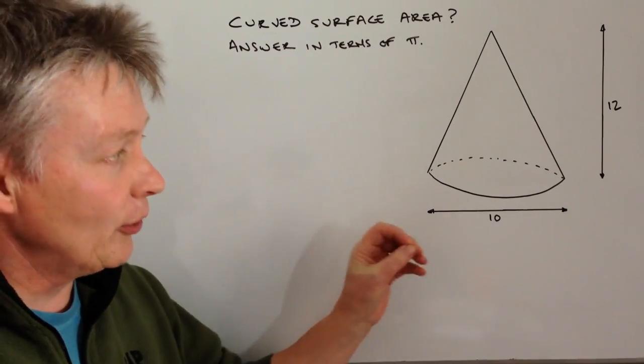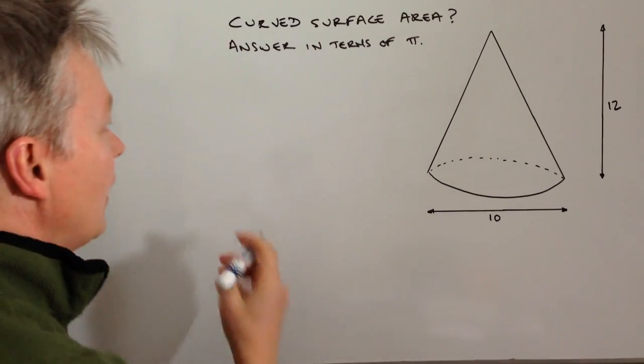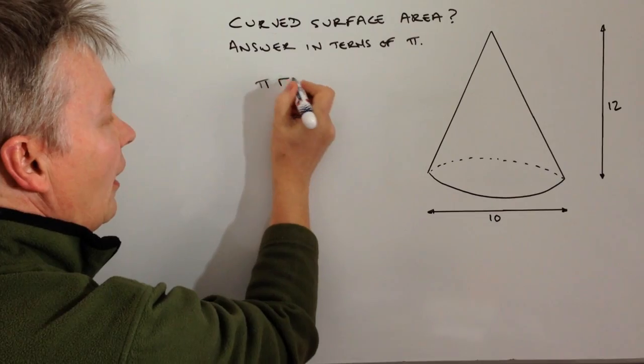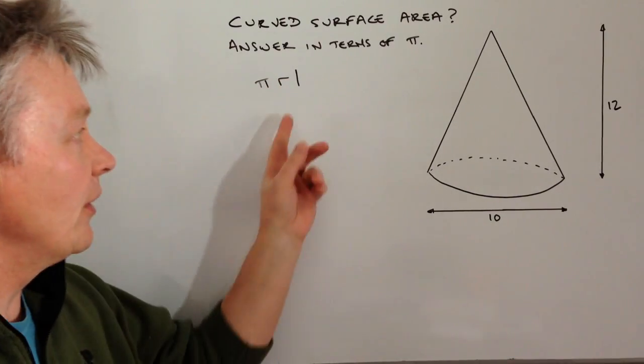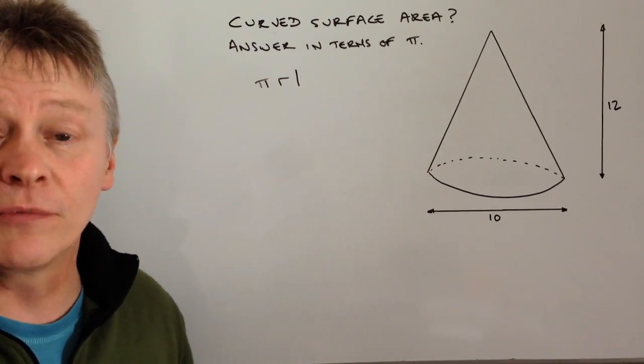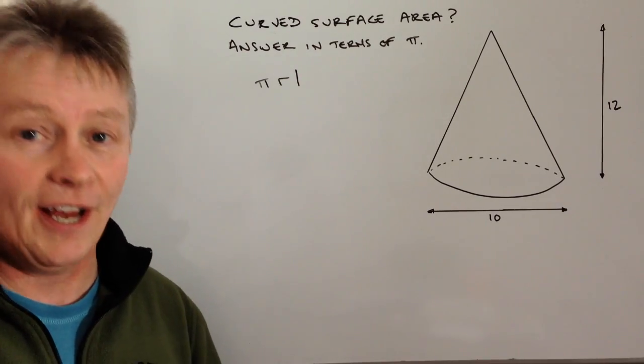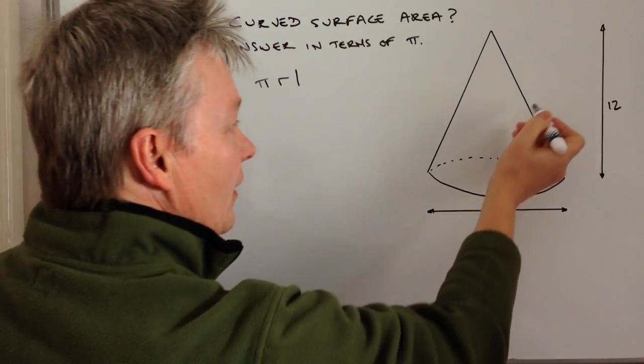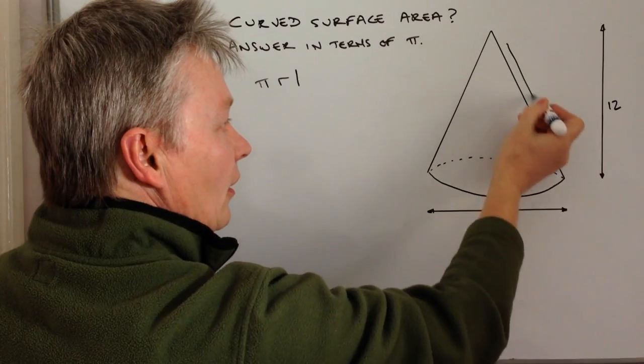The formula for curved surface area is πRL, and it's very important to remember this L relates to something called the slant height, which is actually this dimension along here.